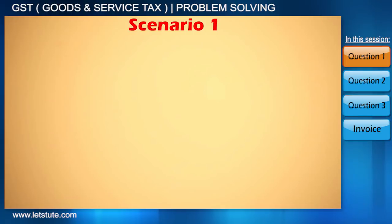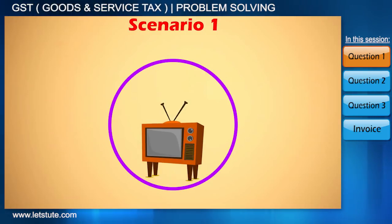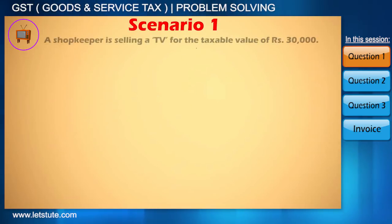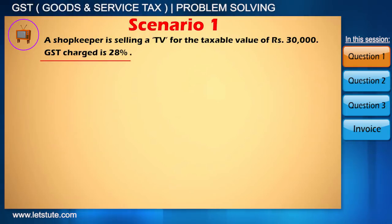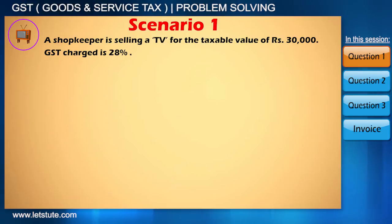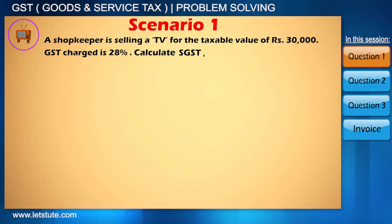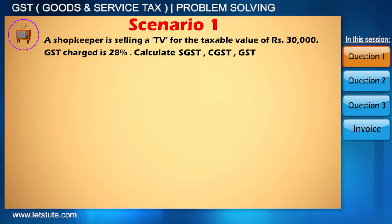Here is a scenario. A shopkeeper is selling a TV for a taxable value of Rs 30,000. GST charged on the TV is 28%. Now, if you want to buy this TV, then how much SGST, CGST, and GST in total will be paid by you? Also calculate the total amount.